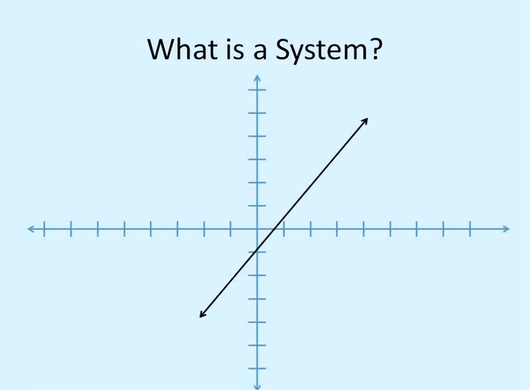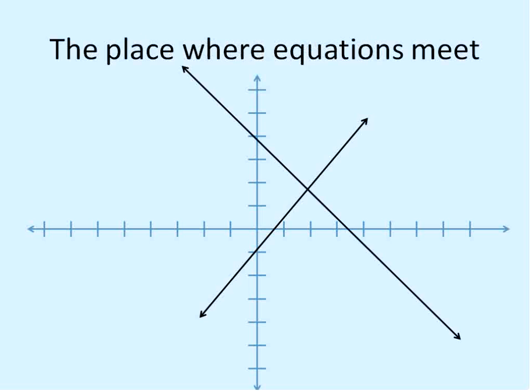First off, we have to talk about what is a system. A system is when you have more than one equation graphed on the same graph. So here's an example. I have a linear equation graphed here. I'm going to add a second one. The place where they meet is called the solution for this system, and these two equations together are a system.